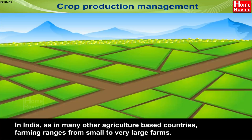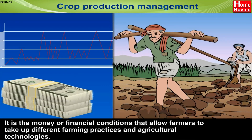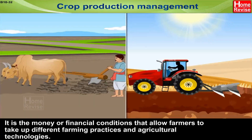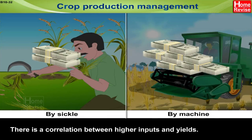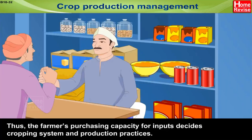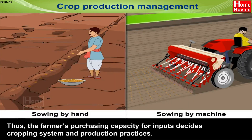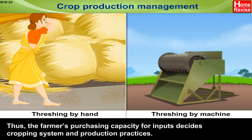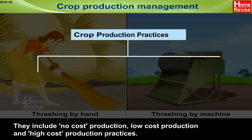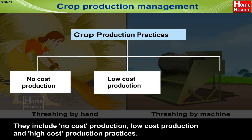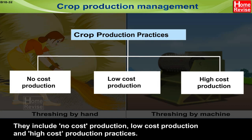Crop production management: in India, as in many other agriculture-based countries, farming ranges from small to very large farms. It is the financial conditions that allow farmers to take up different farming practices and agricultural technologies. There is a correlation between higher inputs and yields. Thus, the farmer's purchasing capacity for inputs decides the cropping system and production practices. Production practices can be at different levels, including low cost and high cost production practices.